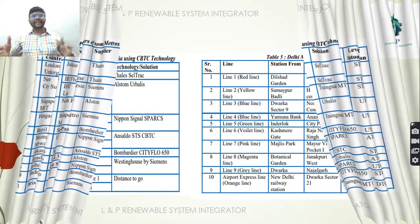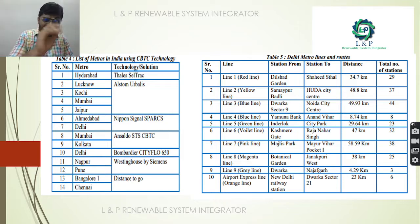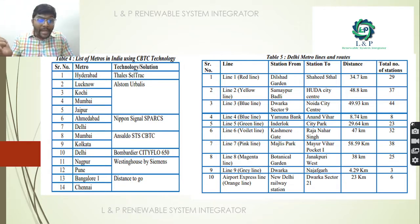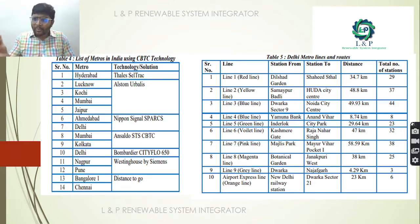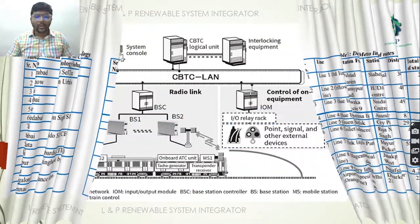In India, metros implementing CBTC technology include Hyderabad, Lucknow, Kochi, Mumbai, Jaipur, Ahmedabad, Delhi, Kolkata, Nagpur, Pune, Bangalore, and Chennai. Delhi Metro alone has more than 10 lines — Red, Yellow, Blue, Green, Violet, Pink, Magenta, Gray, and Orange lines.